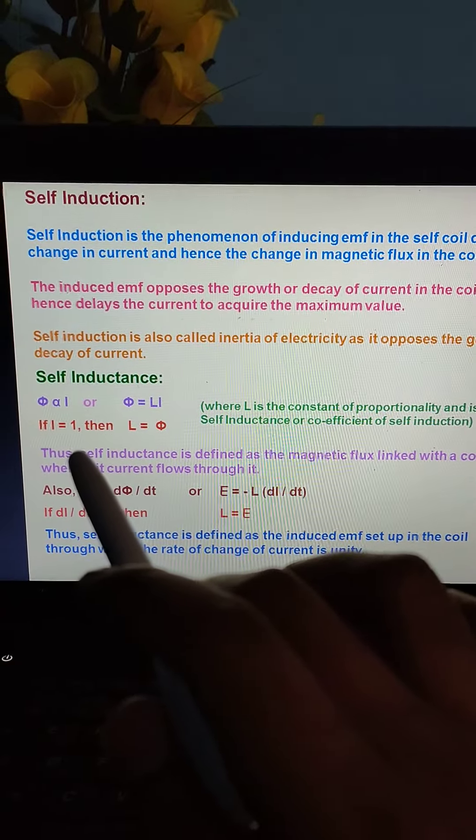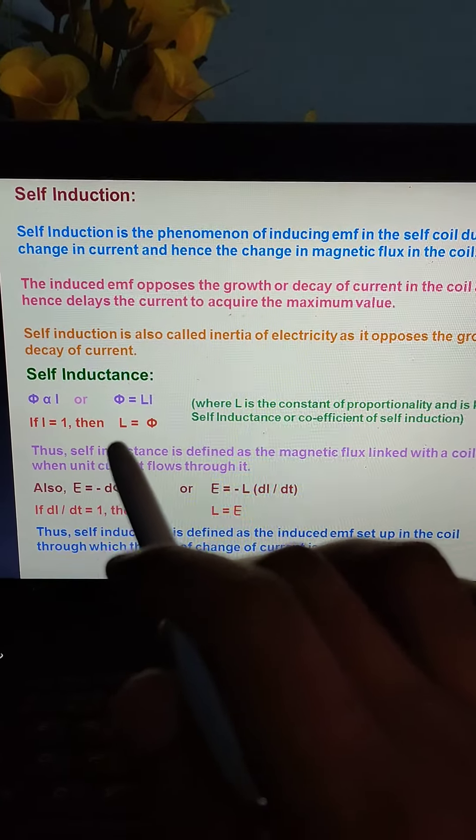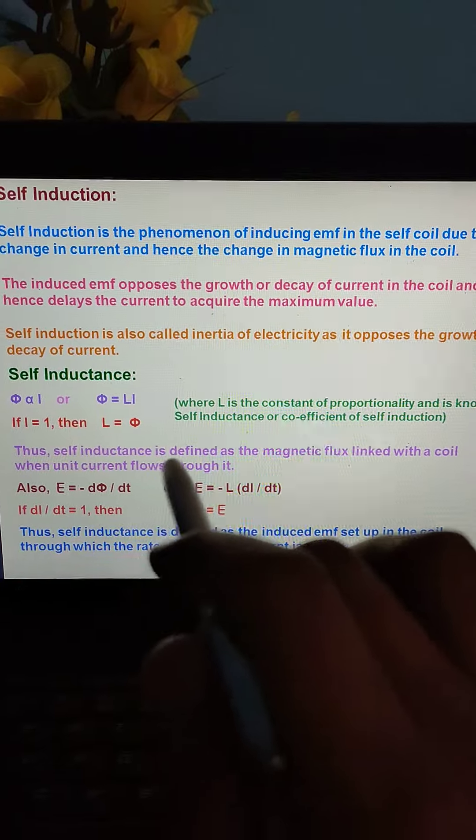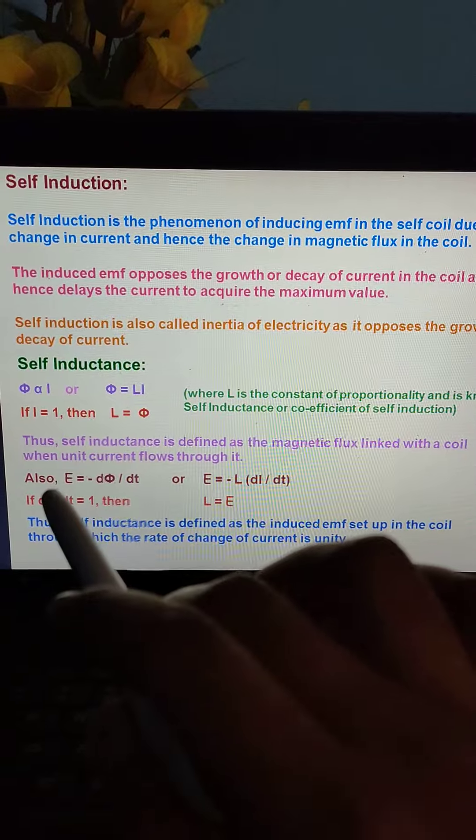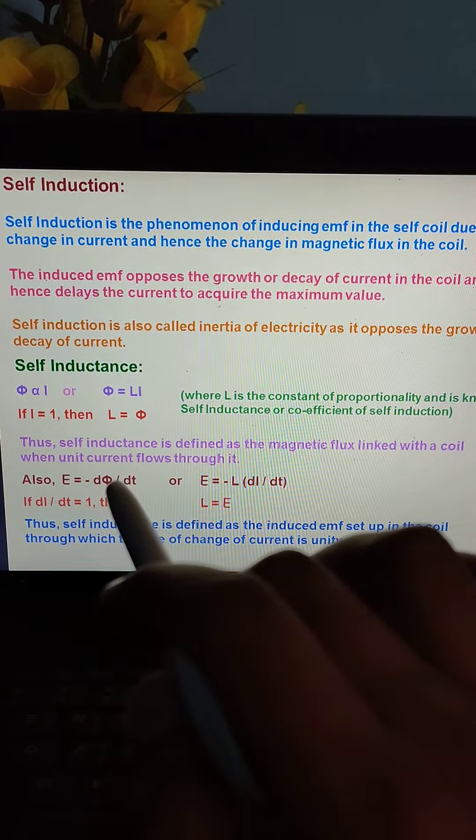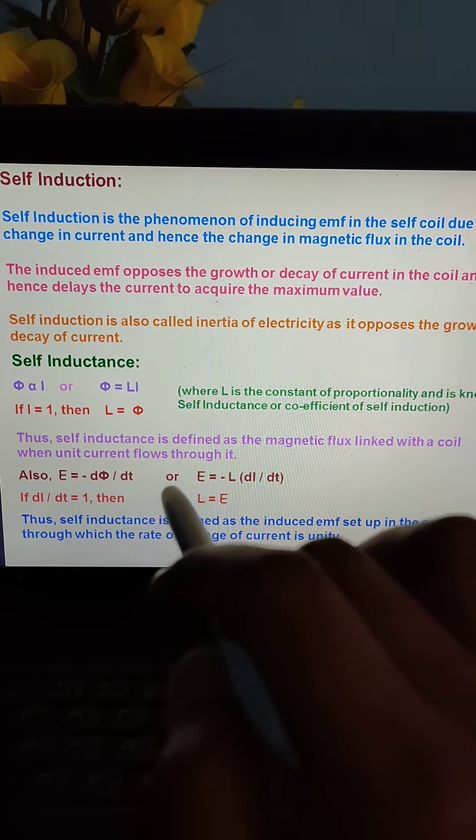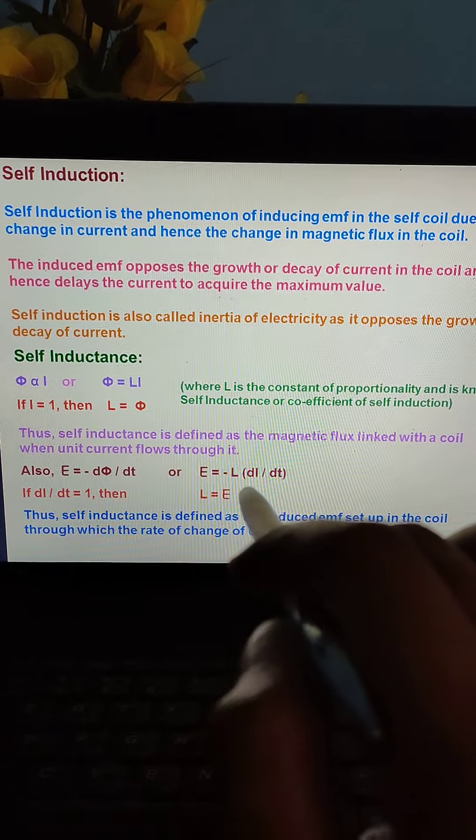If the value of current is 1 ampere, then L equals phi. Self inductance is defined as the magnetic flux linked with the coil when unit current flows through it. Also, E equals minus d phi by dt, or E equals minus L di by dt.